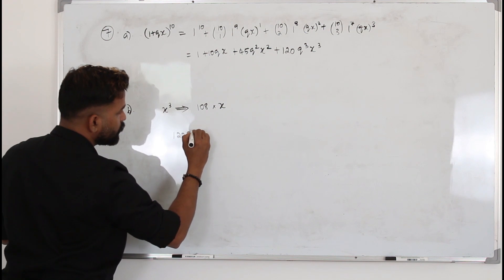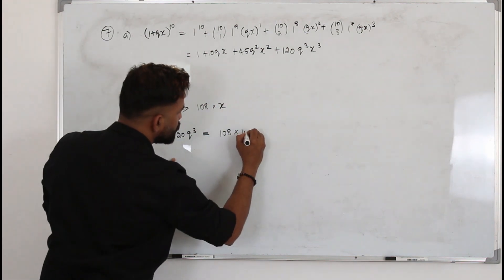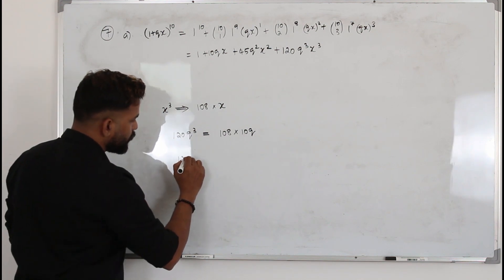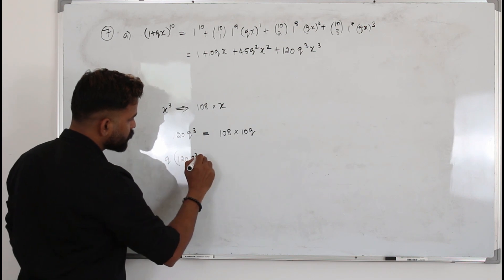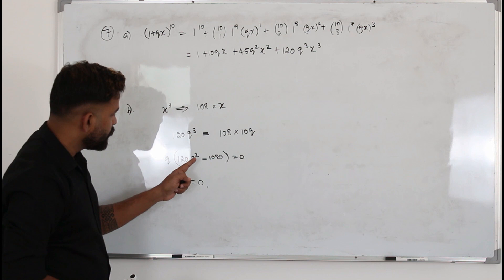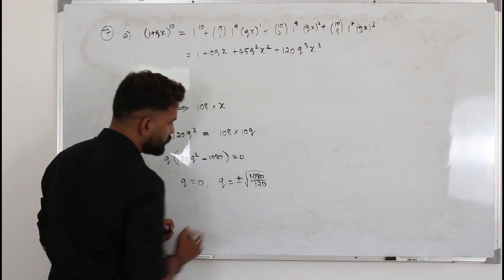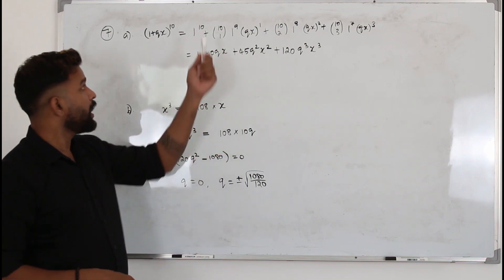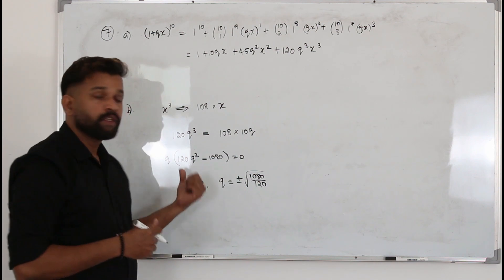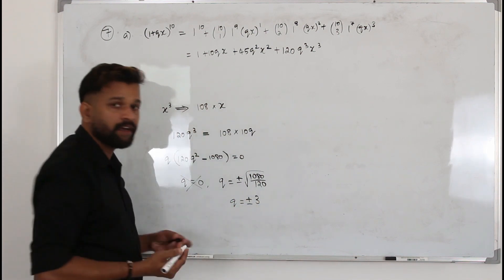Take the coefficient of x³ first, which is 120q³ equals the coefficient of x³ is 108 times coefficient of x, which is 10q. Solve this. You will get the values of q. Put this here. 120q, I am going to take q as a common factor: q(q² - 9) = 0. So q=0, and when you solve this, you will get q = ±√(1080/120). So whenever you get values like this, always go back and read the question properly. Sometimes they will mention like q is greater than 0 or q is a positive constant or something like that. So the question says q is a non-zero constant. So just leave this. Take only this one. So ±3. Positive 3 or negative 3. That's all.